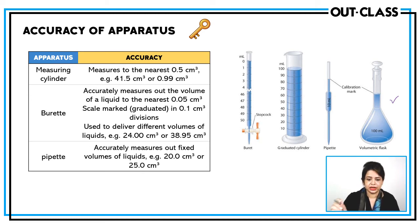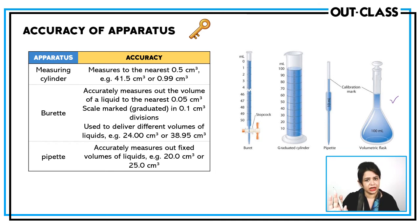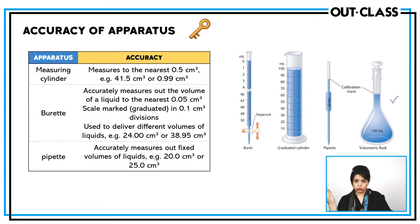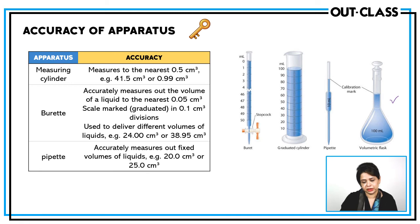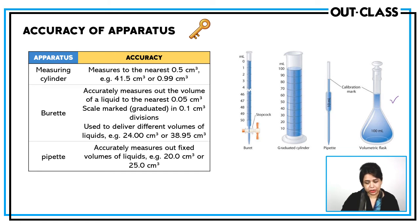A measuring cylinder can measure to the nearest 0.5 cm³, but a burette can accurately measure up to 0.05 cm³ — making it a very accurate method. If you need to measure an unknown volume, the burette is ideal, but it can only measure up to 50 cm³. A pipette is ideal for measuring a fixed small volume such as 10, 20, or 25 cm³ depending on its capacity. Remember: pipettes and volumetric flasks cannot measure variable volumes — only the one fixed volume marked on them.